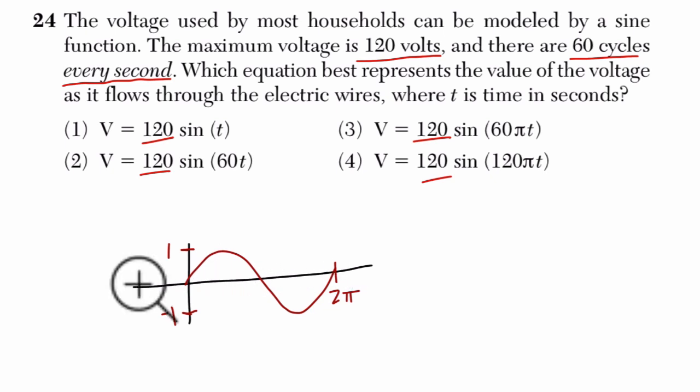But if you stretch it, if you multiply it by 120, that takes the function and stretches it so that its highest value is 120 and its lowest value is negative 120. So the amplitude is always going to be 120, that describes exactly what's happening right here.